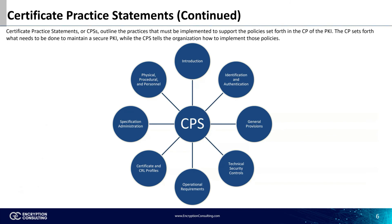The sections that make up a CPS are the introduction, identification and authentication, general provision, technical security controls, operational requirements, certificate and CRL profiles, specification administration, and physical procedural and personnel. As you can see, many of these sections overlap with the CP, since the CPS is meant to highlight the certificate policy.